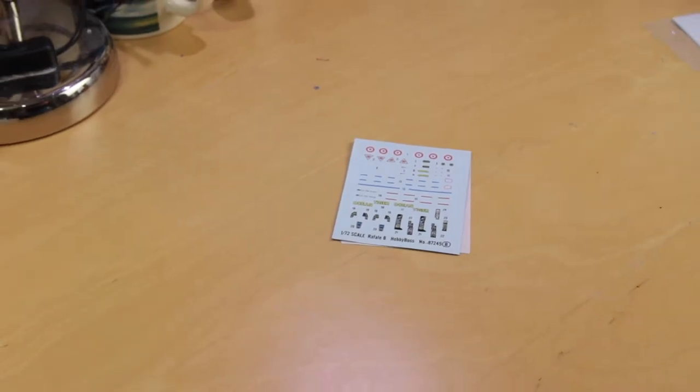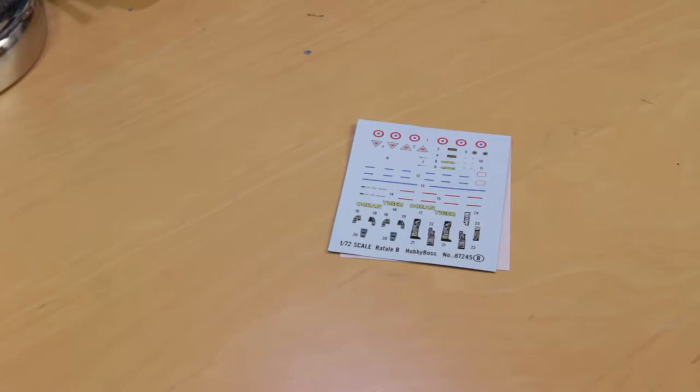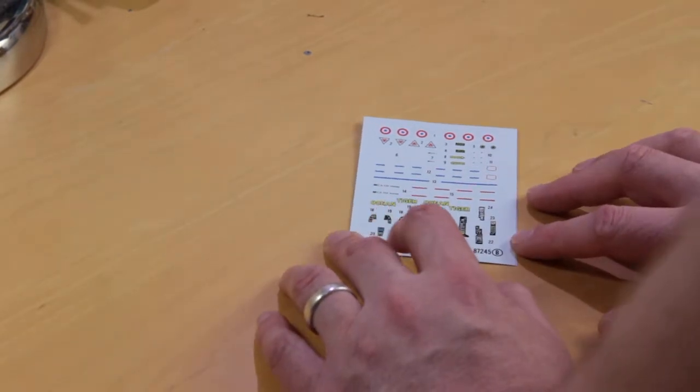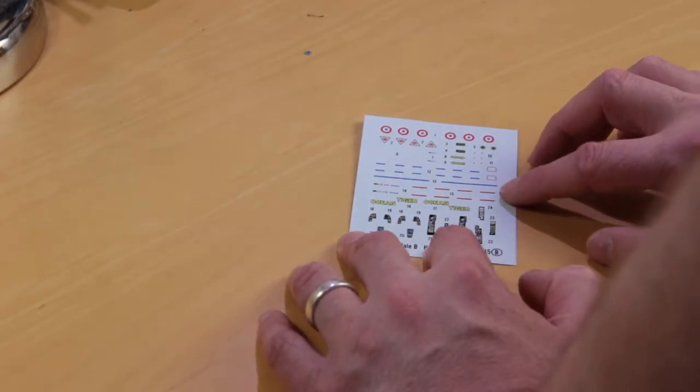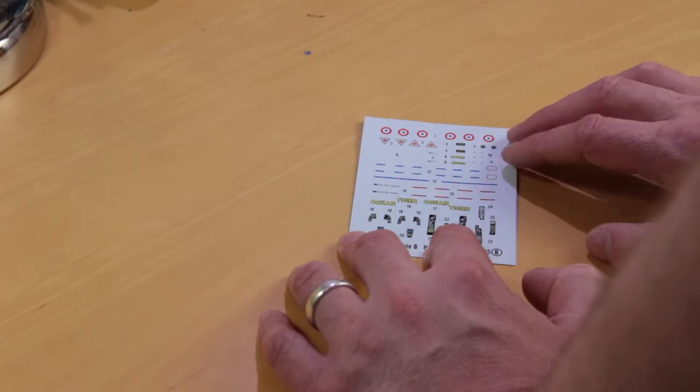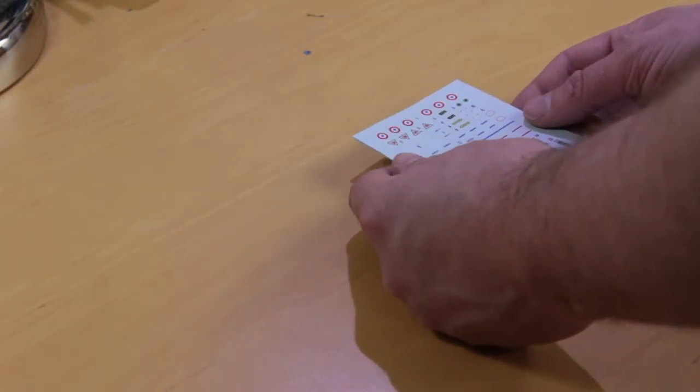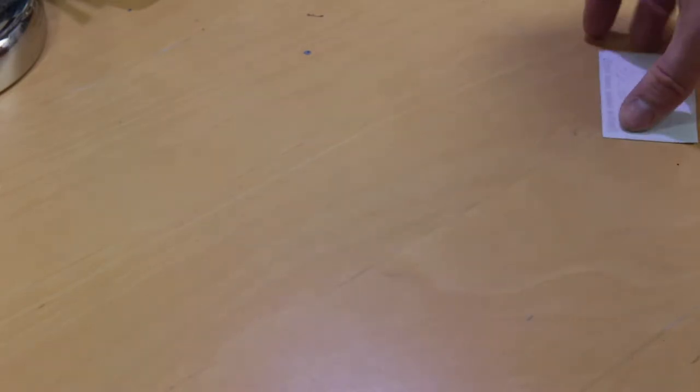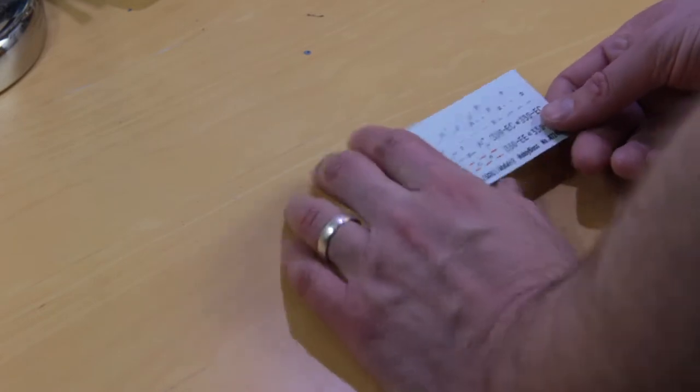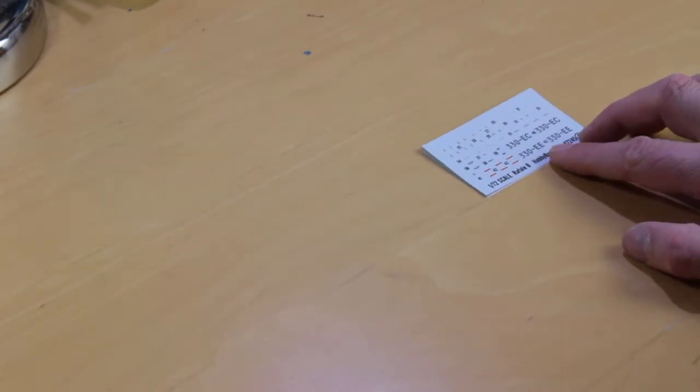Then we've got the cockpit decals, weapon markings, the French cocarde, stenciling. Once again, look quite nice, not too shiny. The last one we've got in the decals is some more stenciling, smaller stenciling and the serial numbers for the aircraft. Decals look all right, certainly gives us a good variety.